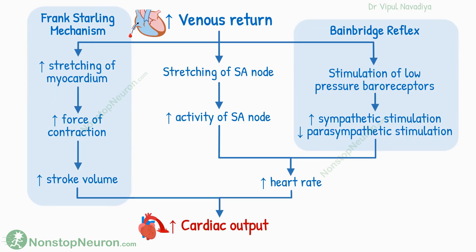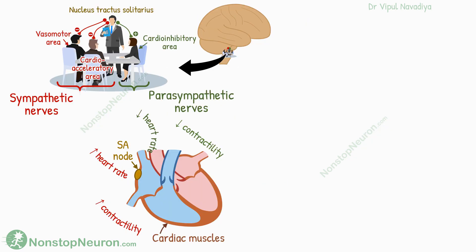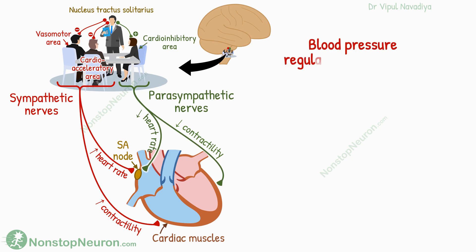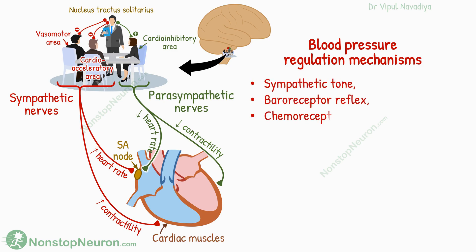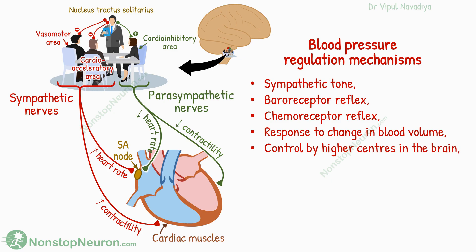This is how cardiac output is controlled indirectly by venous return. Apart from this, it is also regulated by direct sympathetic or parasympathetic activity. These influences are mostly a part of blood pressure regulation mechanisms, like sympathetic tone, baroreceptor or chemoreceptor reflex, response to a change in blood volume, control by higher centers in the brain, CNS ischemic response, and Cushing reaction.